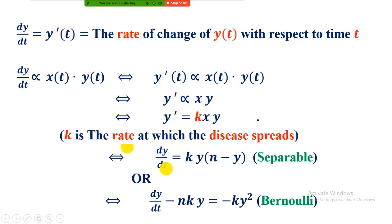So now we can write dy by dt is equal to k y into n minus y, and this is a first order non-linear equation which is also called separable because the variables can be separated.